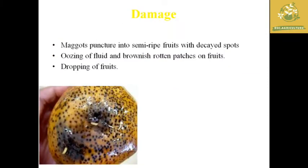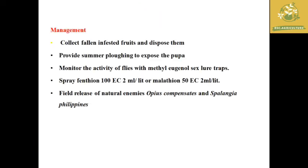Maggots are the major cause of damage. They puncture semi-ripened fruit and form decayed spots on the whole fruit. There is also oozing of fluid and brownish rotting patches on the fruit based on the severity of damage, and dropping of fruit occurs in several cases.